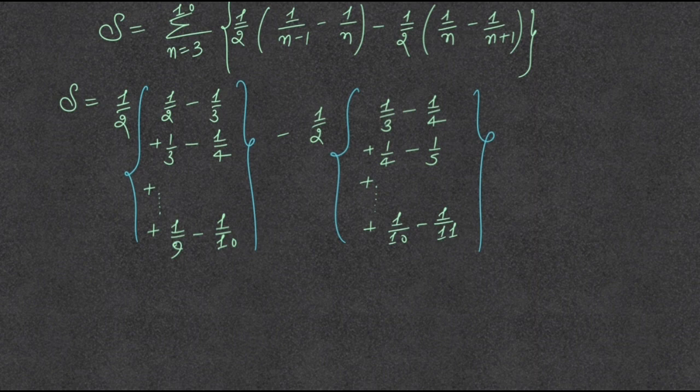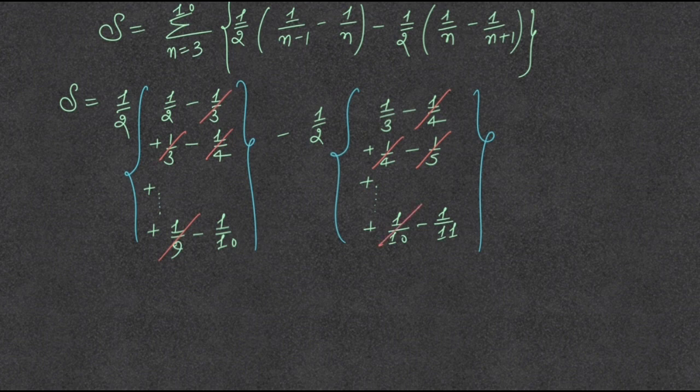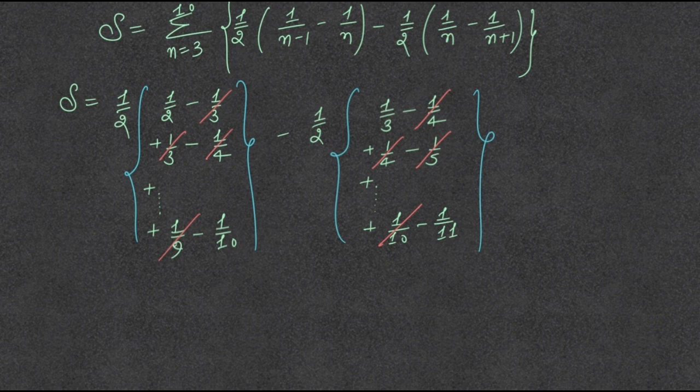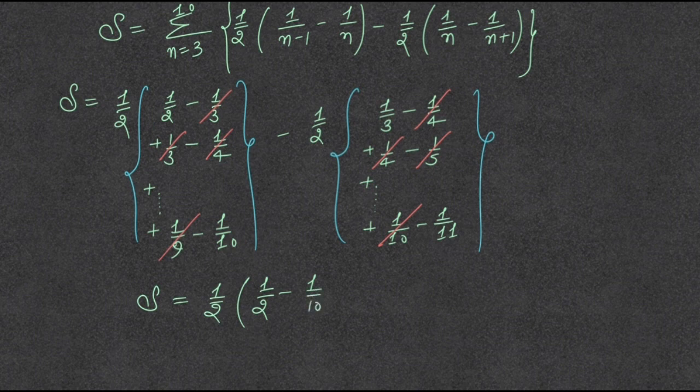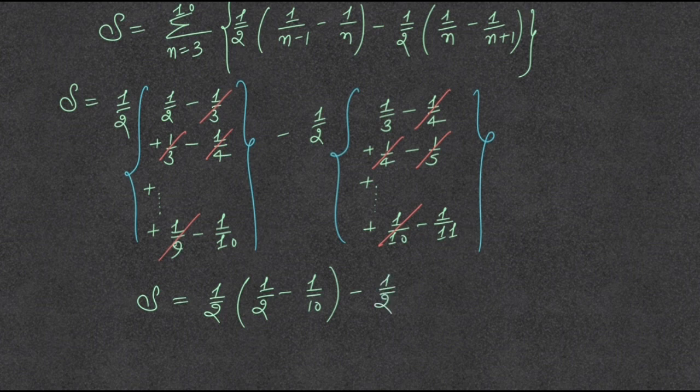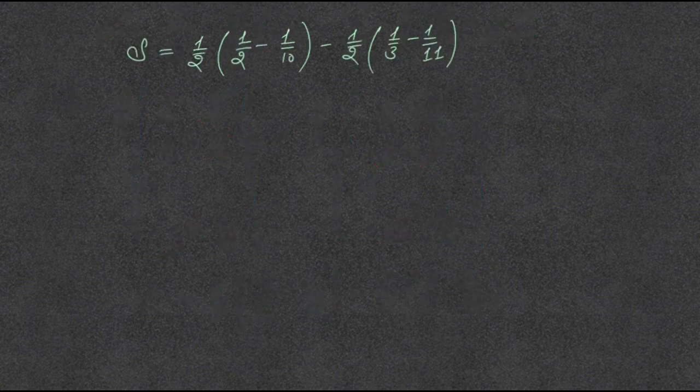Canceling the common terms: minus 1 by 3 plus 1 by 3 and the sequence follows up to 1 by 9. For the second bracket like this, S finally is 1 by 2 into 1 by 2 minus 1 upon 10 minus 1 upon 2 into 1 upon 3 minus 1 upon 11.